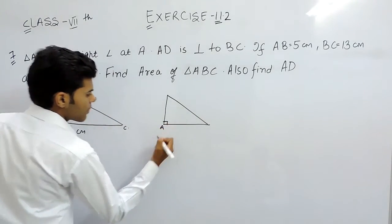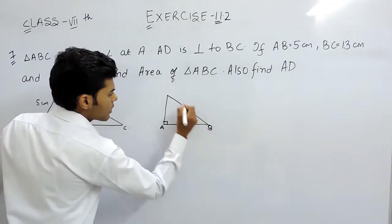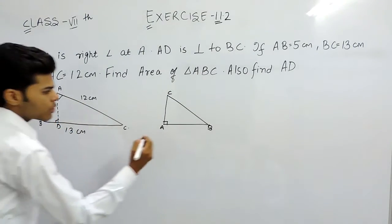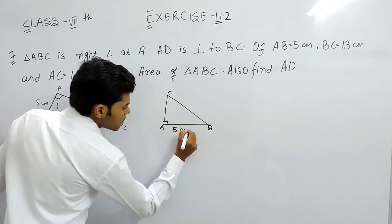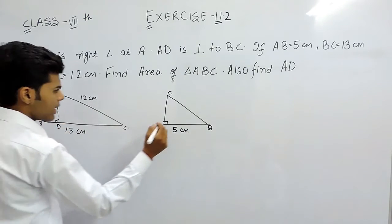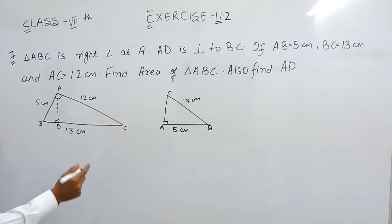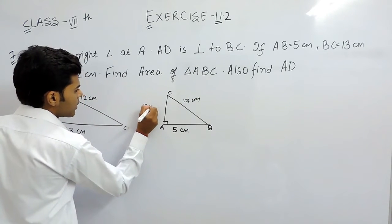This is A. This is B. This is C. Now A is right angle. Here also A is right angle. AB is equal to 5 cm. BC is equal to 13 cm and AC is equal to 12 cm.